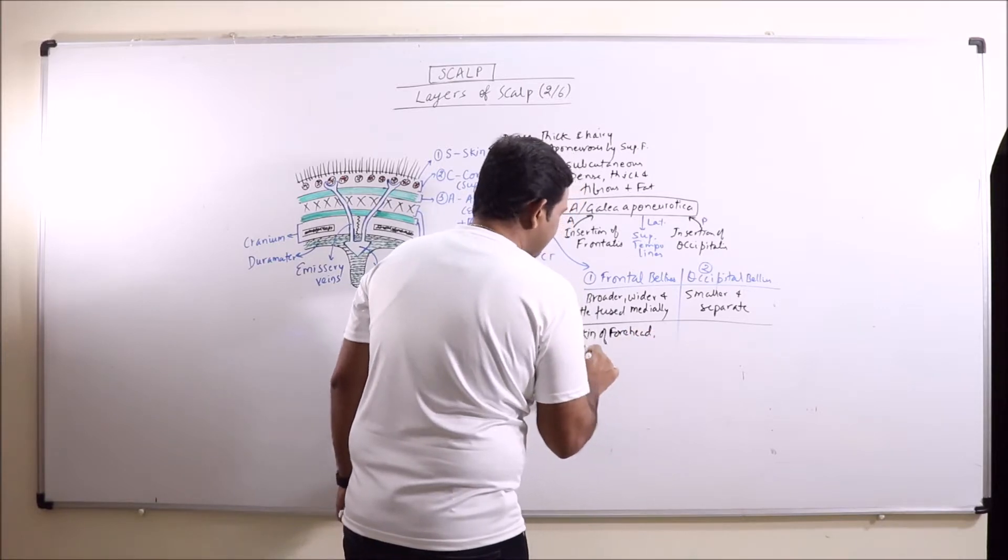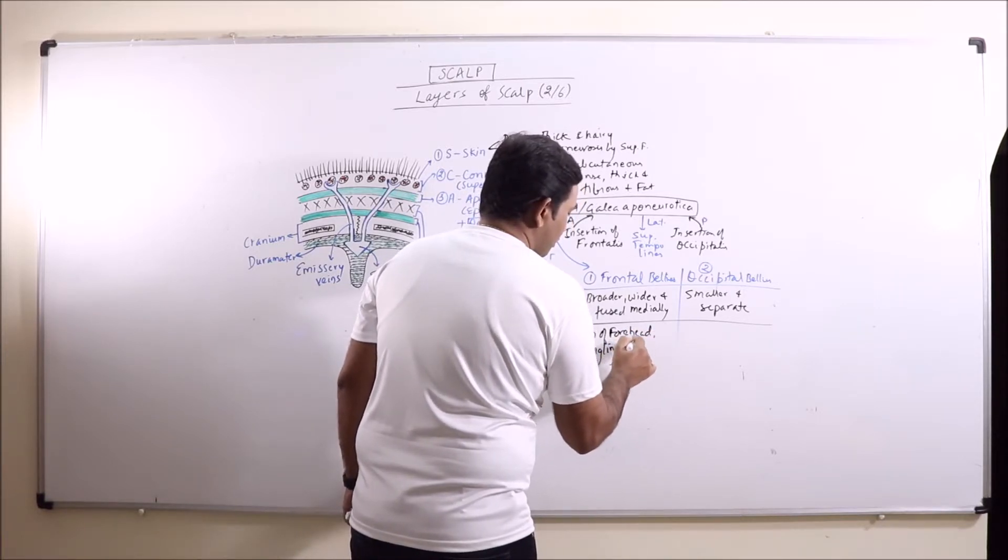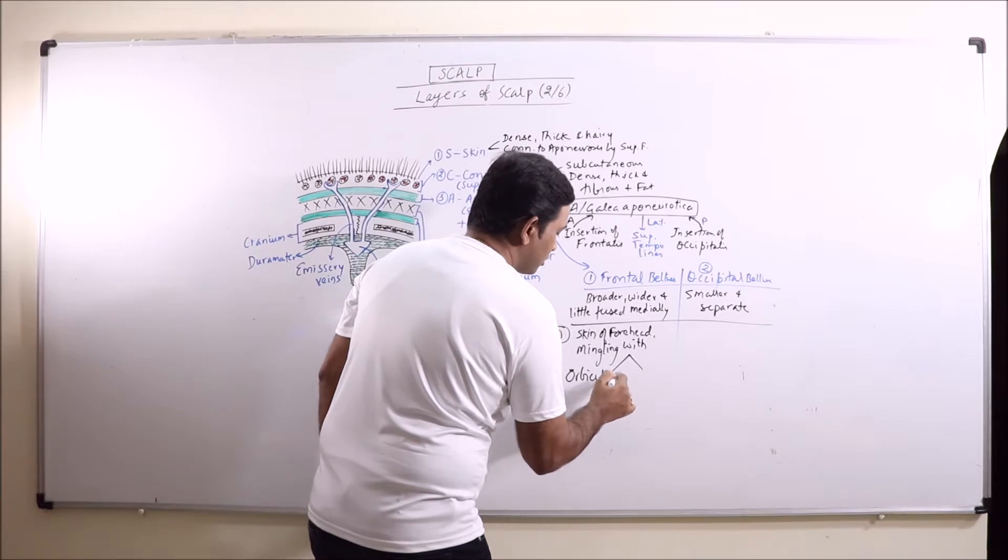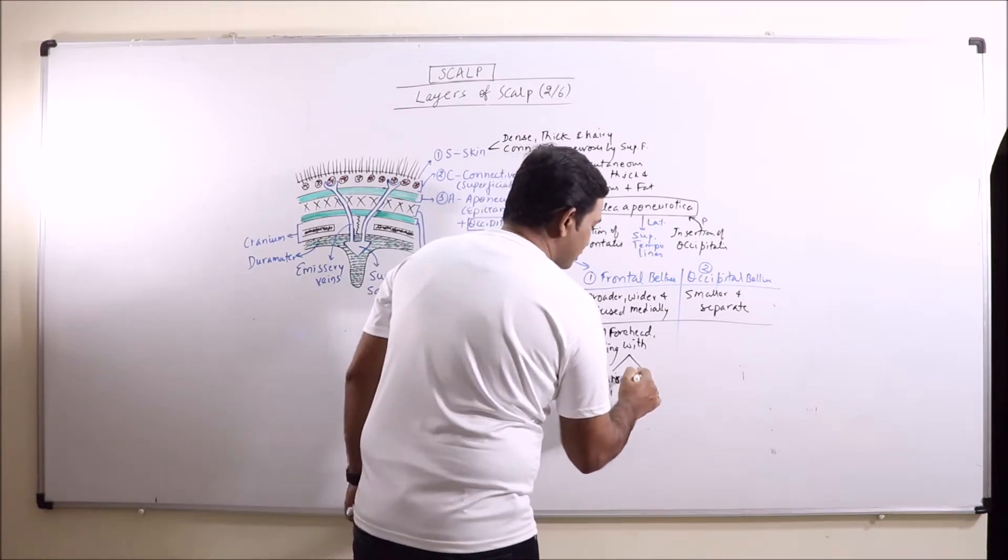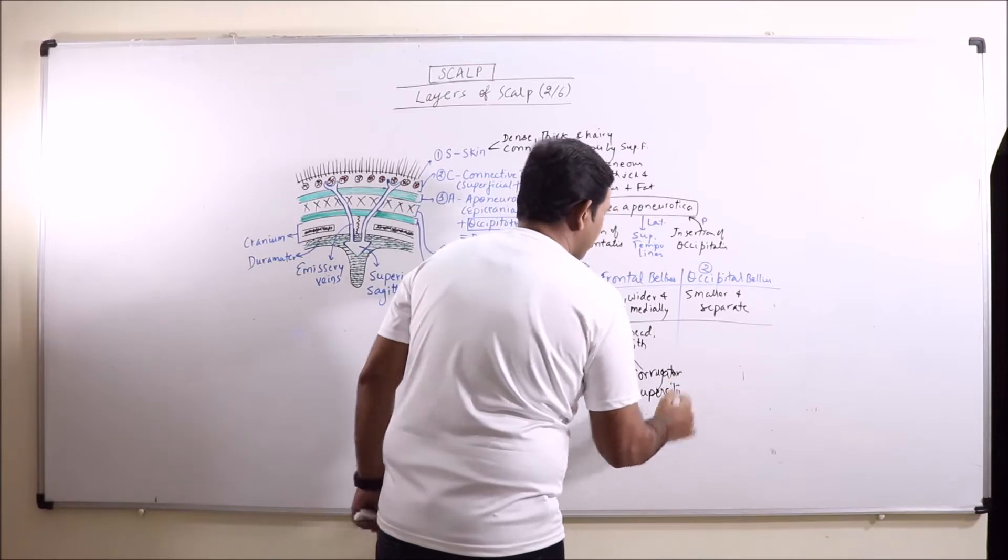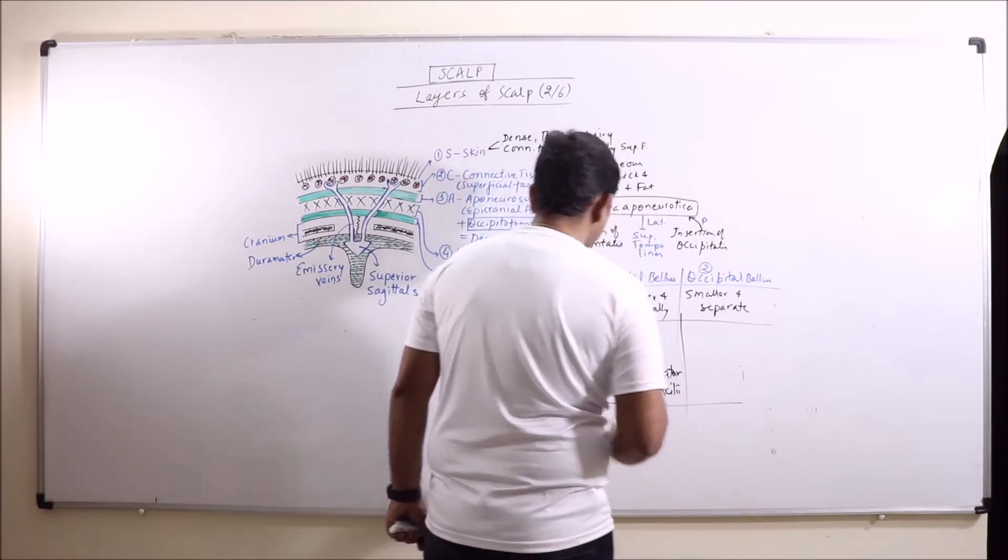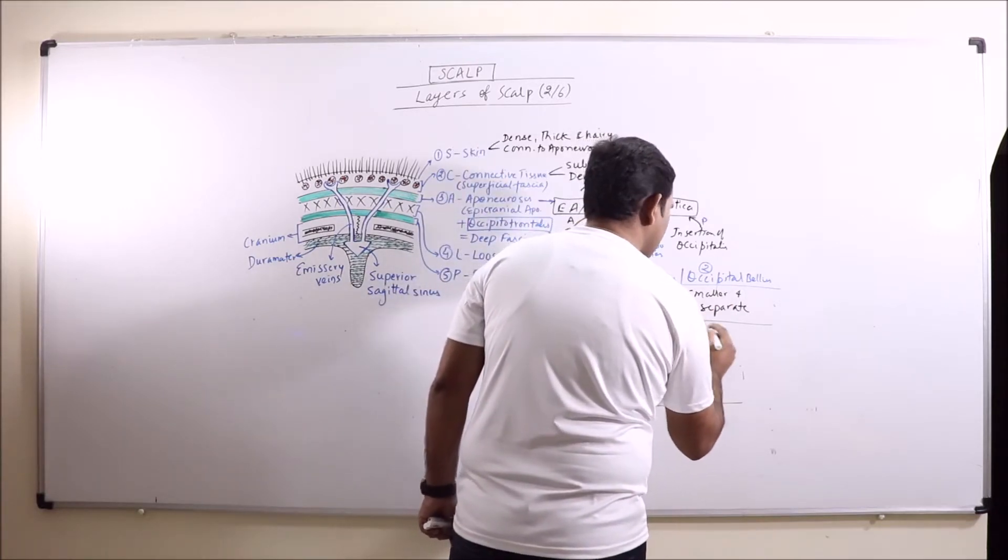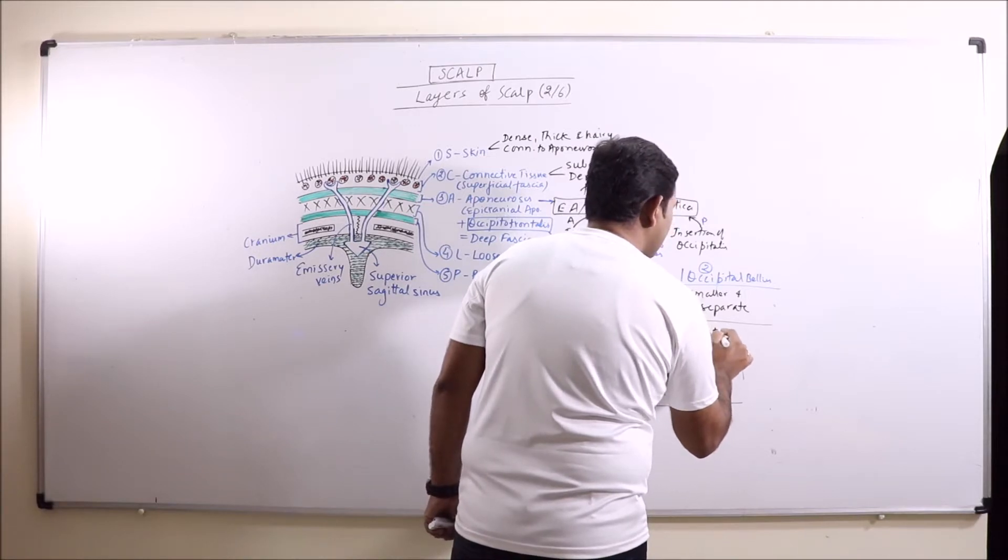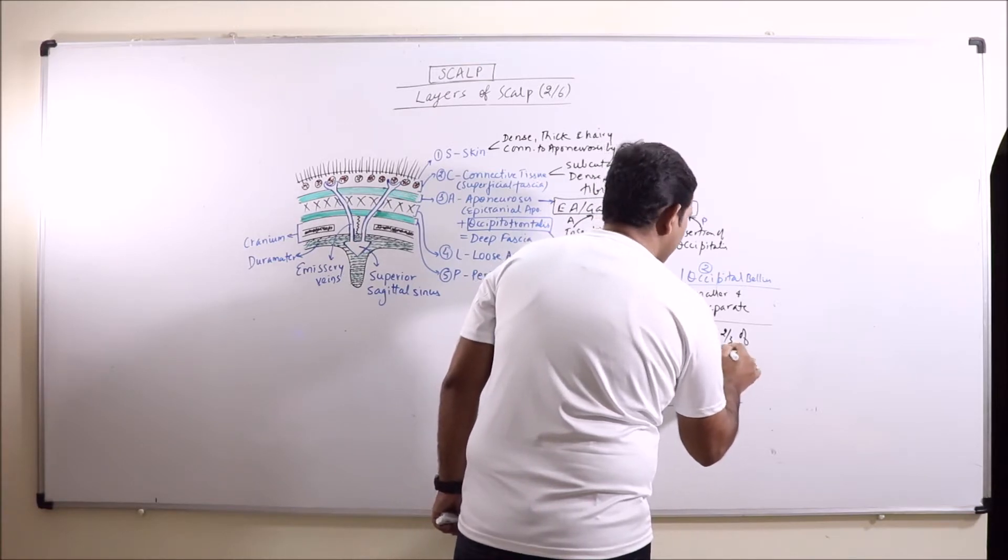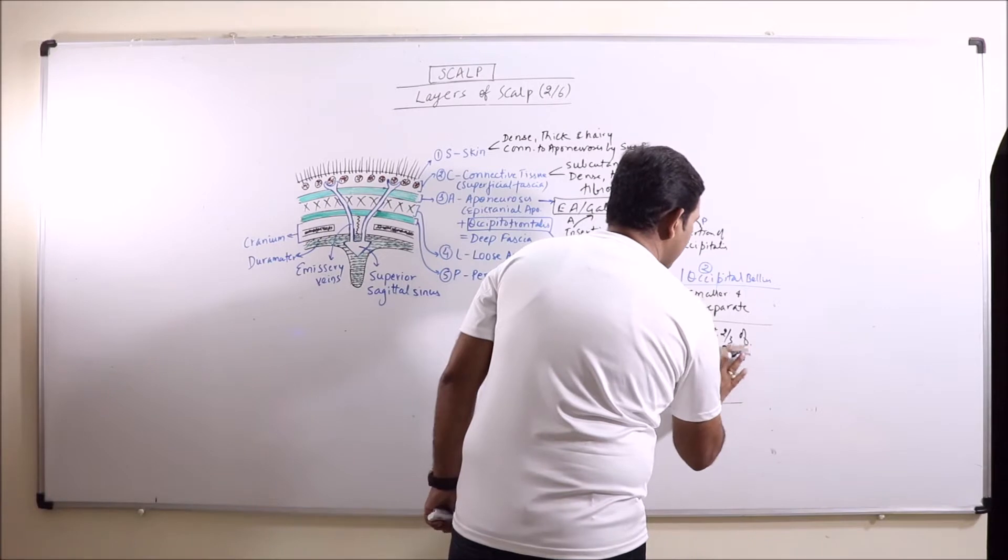Frontal bellies originate from the skin of forehead, mingling with orbicularis oculi and the corrugator supercilii. While the occipital bellies originate from the lateral two-third of superior nuchal line.